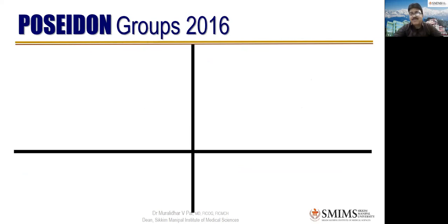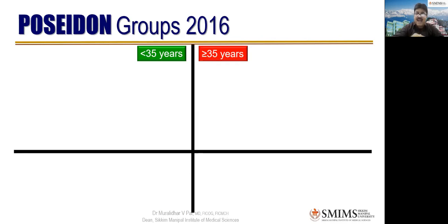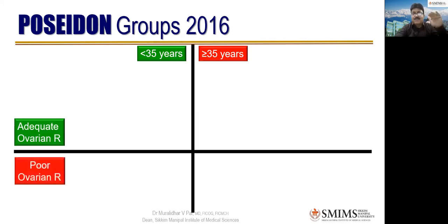This is the key POSEIDON slide - four quadrants formed by a cross. Left is less than 35 years (green), right is more than 35 years (red). Above the line is adequate ovarian response (green), below is poor ovarian response. They have played with this permutation and combination to give four groups. Group 1: young, less than 35 years, with adequate ovarian response - AFC more than 5, AMH more than 1.2 nanograms - but with an unexpected poor or sub-optimal ovarian response.